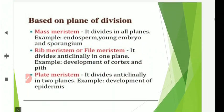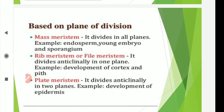The third classification of meristematic tissue is based on plane of cell division. On this basis, meristem is classified into three categories: mass meristem, rib meristem, and plate meristem. In mass meristem, cells divide in three planes — anticlinally, periclinally, and diagonally — thus producing a mass of cells. Examples include embryonic meristem at early stage, embryonic meristem in sporangia, pith, endosperm, young embryo, and cortex tissue.